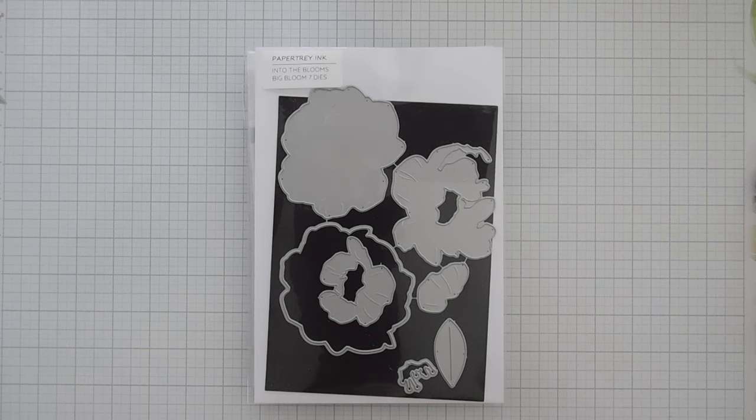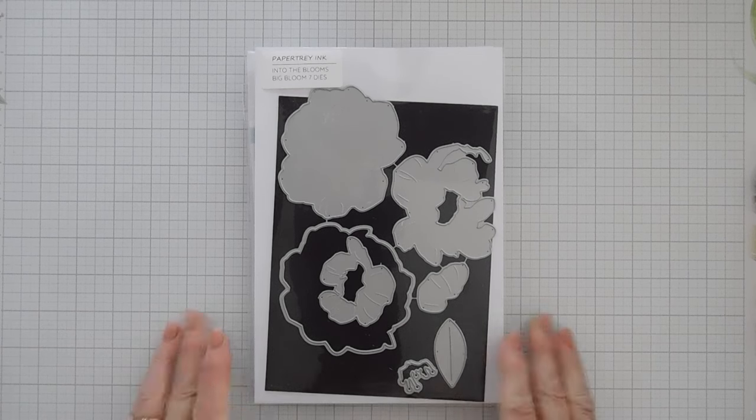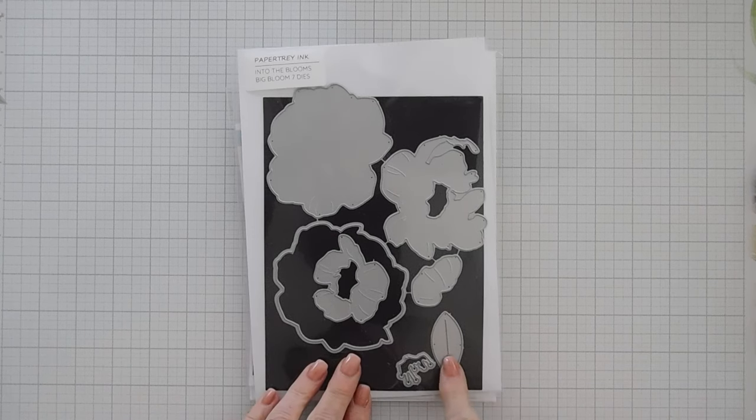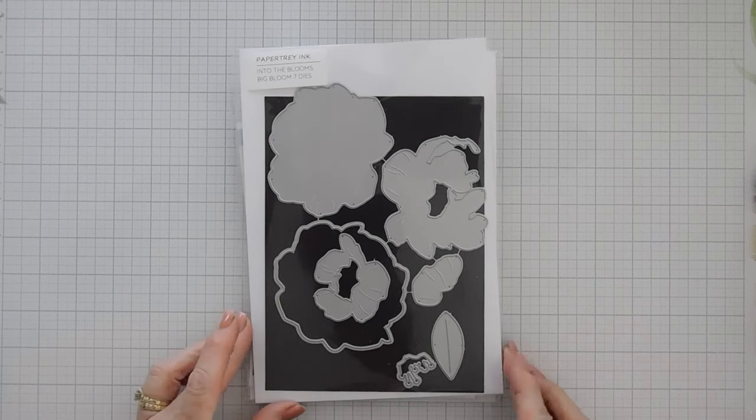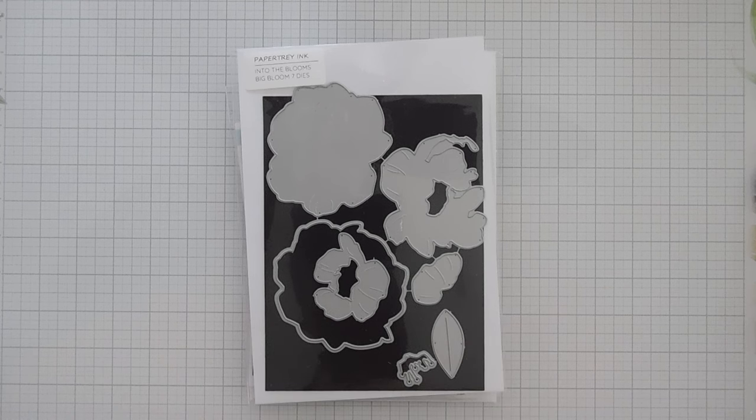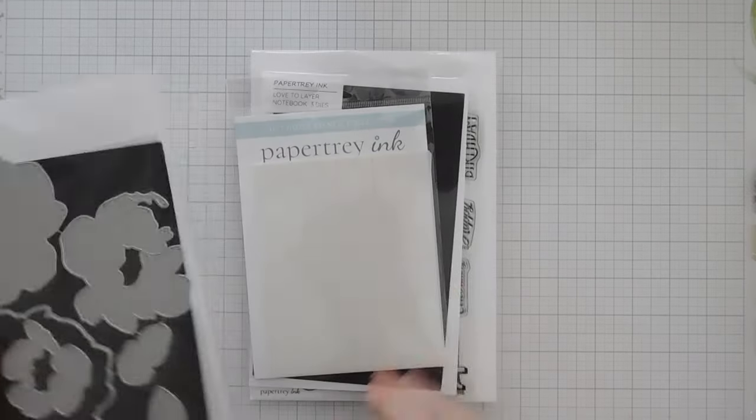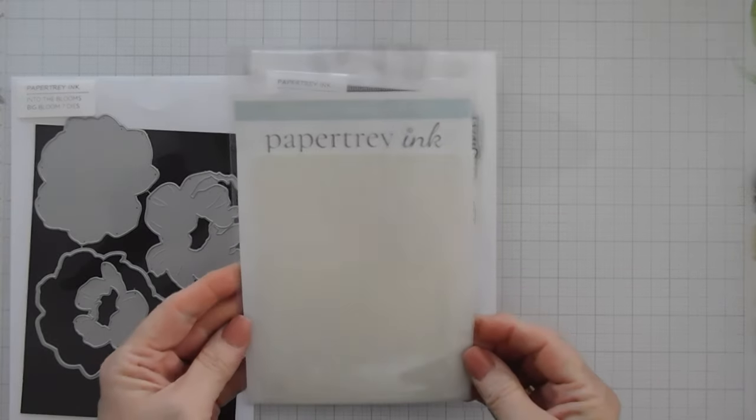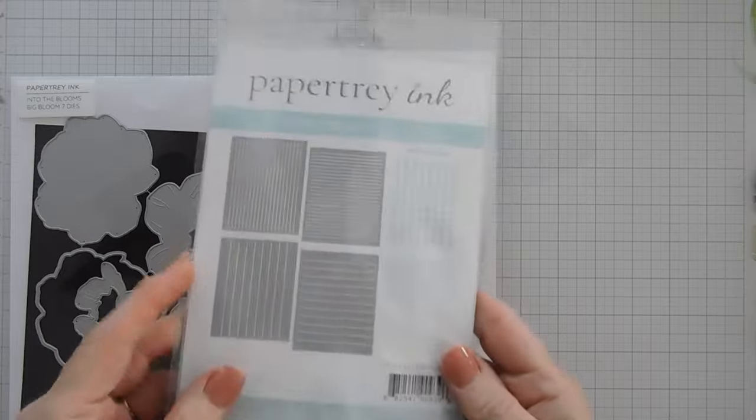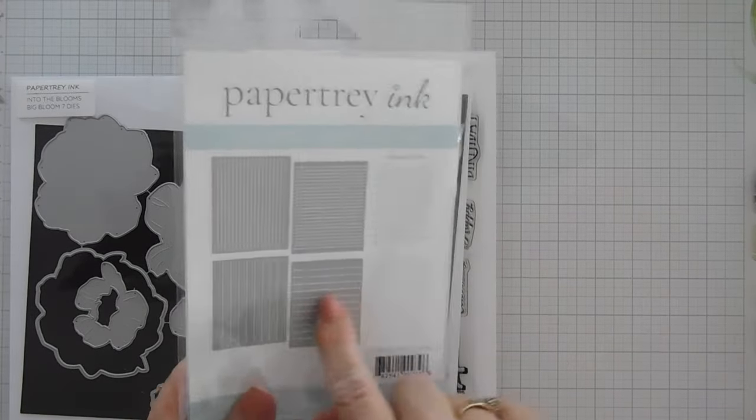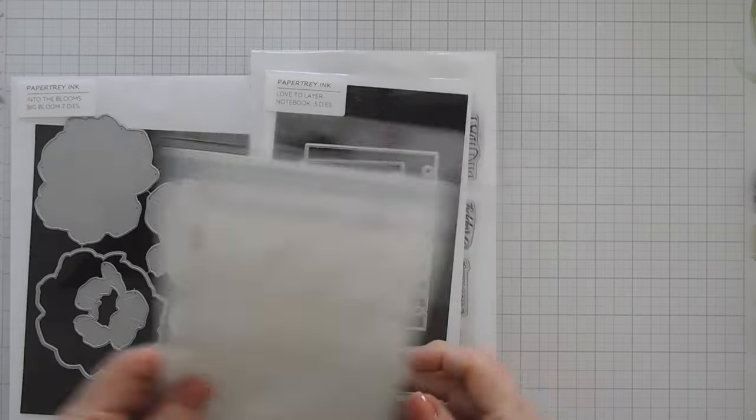We are using a Big Bloom. This is the Into the Blooms Big Bloom die set. It creates one large bloom. You have a leaf in here and it's a layering flower so you layer all the pieces together and the flower it creates is just stunning. We're going to use this to create a birthday card and then I'm also going to bring in the brand new Just Notes stencil collection. This stencil creates some grid lines if you want or horizontal or vertical stripes. We're going to use this on our card.